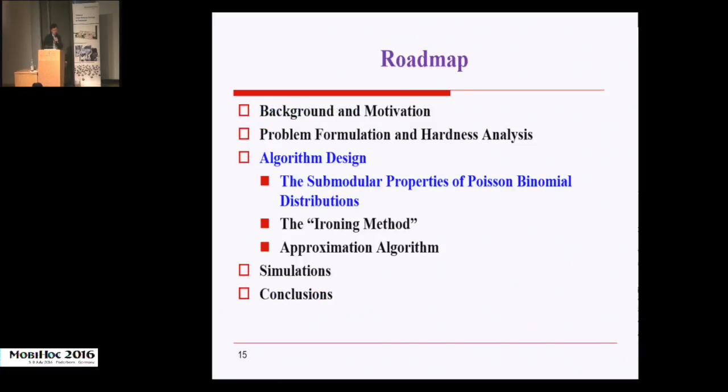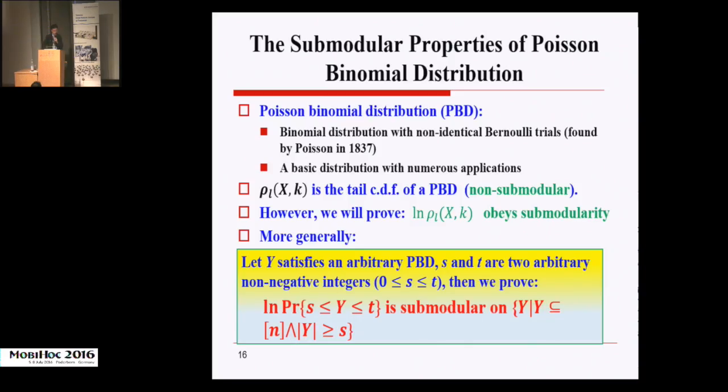Next, we will introduce our solutions. Firstly, we investigate the submodular properties of Poisson Binomial Distributions, which is closely related to our solution. Recall that the key function in the PPRC problem is rho, and it is the tail cumulative distribution function of Poisson Binomial Distribution. Although PBD has numerous applications and many theoretical results on it, nobody has studied the submodular properties of the PBD. In the last slide, we showed that rho is non-submodular. However, if we consider the logarithm of rho, it becomes submodular. This is interesting.